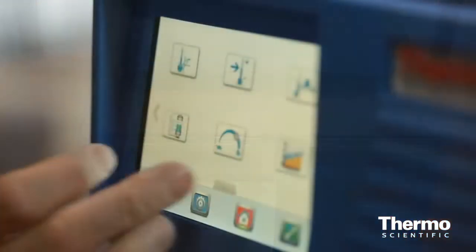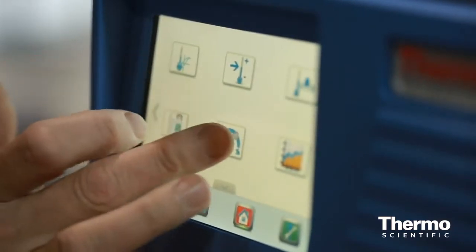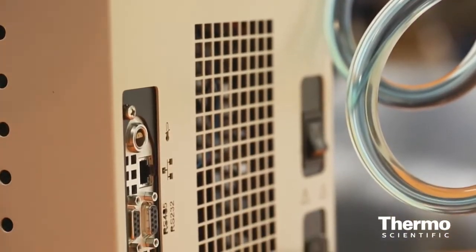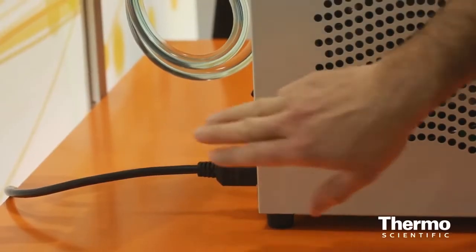The lid, the rack, the touch screen, the communications, and one other big one that we have is the global voltage. It's one part number. Automatically detects the input voltage. You put the appropriate line cord on the back, and this will work in any lab anywhere in the world.